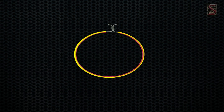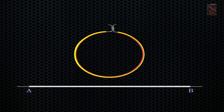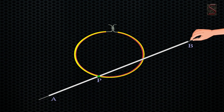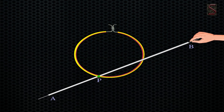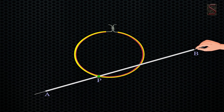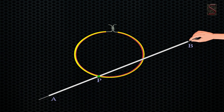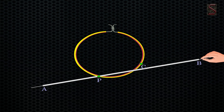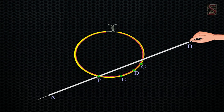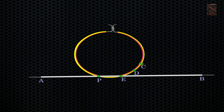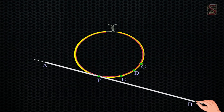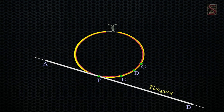Take a circular wire and a straight wire AB. Attach the straight wire to the point P of the circular wire such that AB can rotate about the point P in a plane. Now when we rotate the wire, it meets the circle at point P and also at other points like C, D, and E. At one position we notice that the wire intersects the circle only at point P.